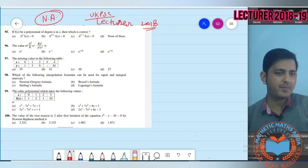If f(x) be a polynomial of degree n in x, then which is correct? f(x) is a polynomial, f(x) degree is given to you, f(x) degree is given to you, this is n.